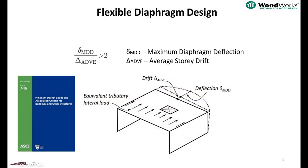This criteria can occur in low, mid, or high-rise light frame wood structures. The shear wall software does not calculate diaphragm deflection at this time, so you would need to compare the shear wall deflection results from the software with the diaphragm deflection results calculated separately.